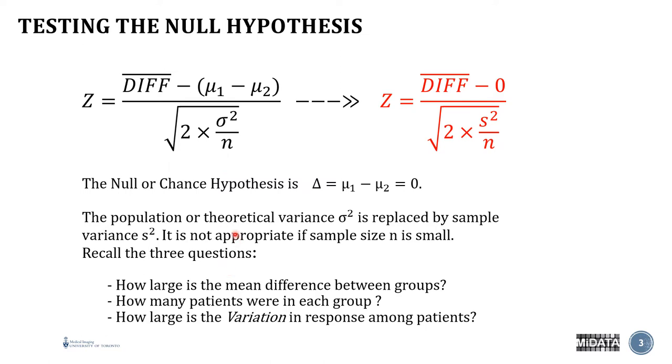Now, when we look at this z-score, remember the three questions or three of the seven questions we talked about. The first was, how large is the mean difference between groups? This is in your numerator. How many patients were in each group is going to affect your denominator. And how large is the variation in response among patients is also going to affect your denominator.